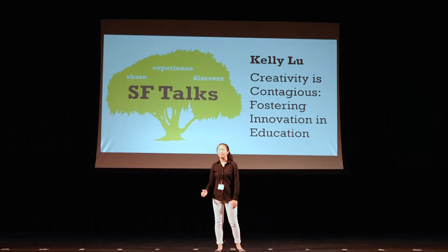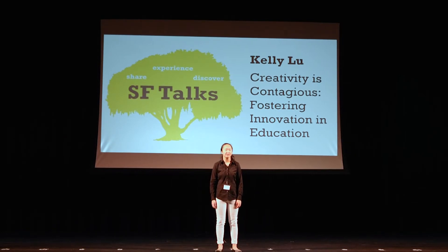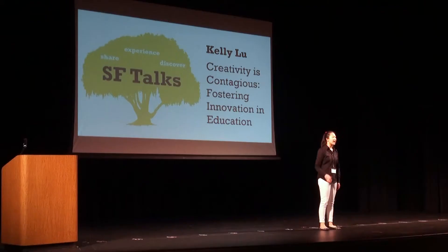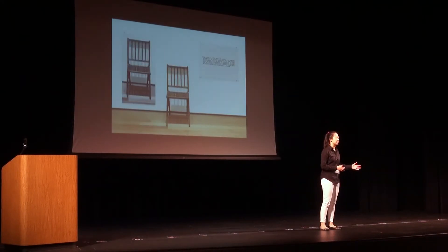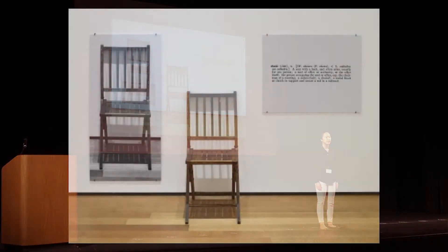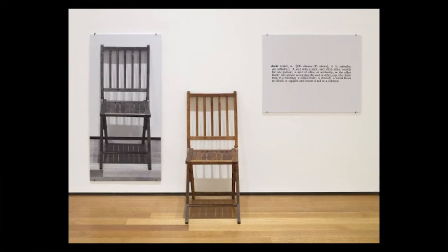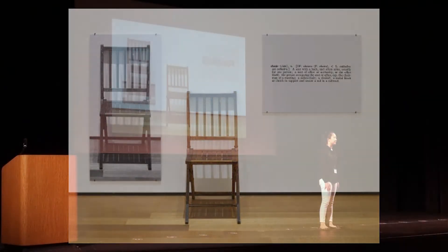This installation by Joseph Kosuth illustrates a chair in three manners: an image, a physical object, and a definition. He challenged the pre-existing ideas of art by assembling items he didn't necessarily make himself.